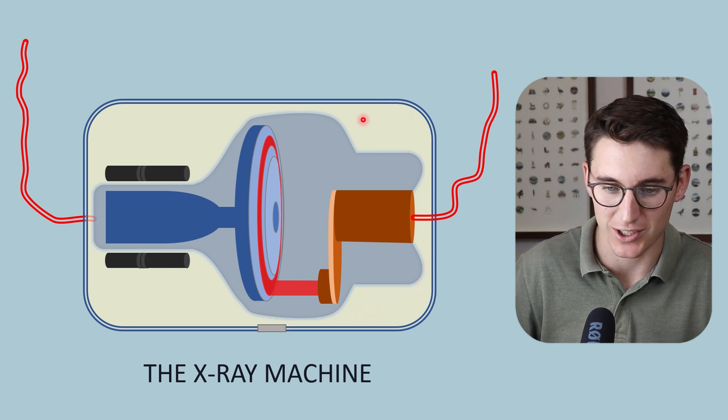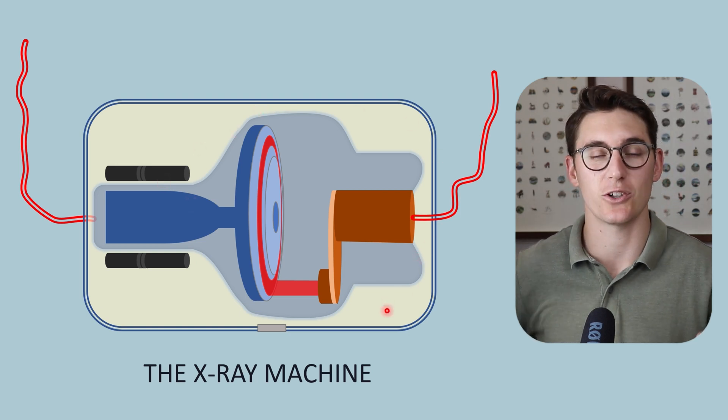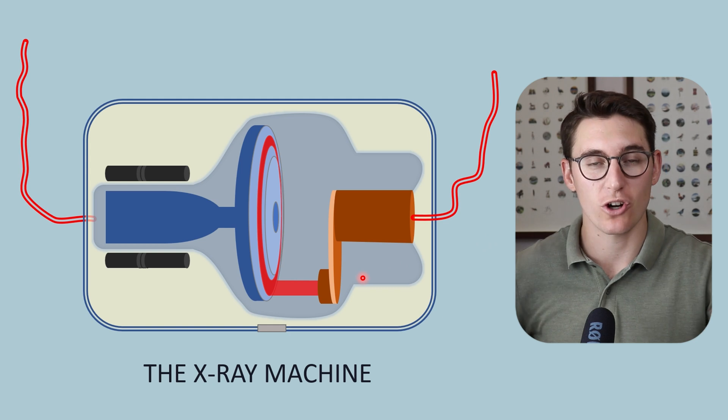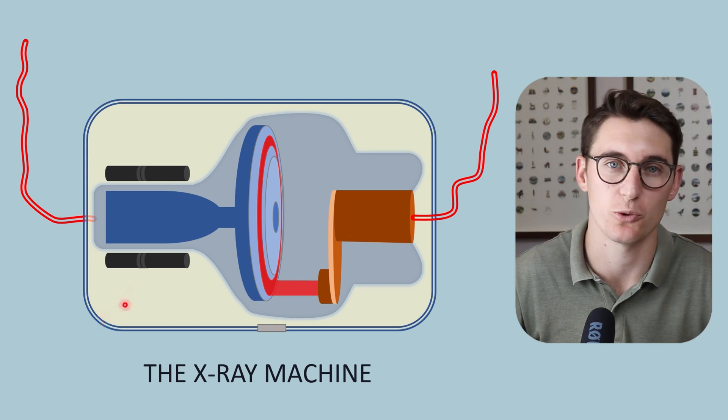Then we can see that there is this conducting oil that surrounds this glass envelope. The conducting oil moves around within the x-ray tube, transferring heat away from our anode and towards our tube housing.